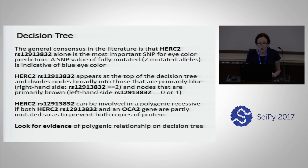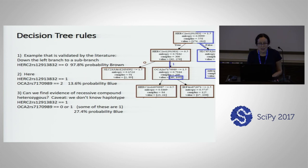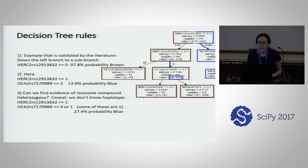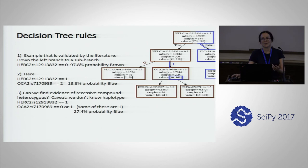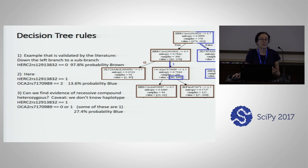Now we want to look for evidence of a polygenic relationship on the tree. Getting rules off the decision tree: if the important HERC2 SNP is less than 1.5 — meaning zero or one — we go down this branch, and we split again on the same SNP. Where the SNP is zero, you can see it's almost entirely brown-eyed people: 97.8% probability with this one combined rule.